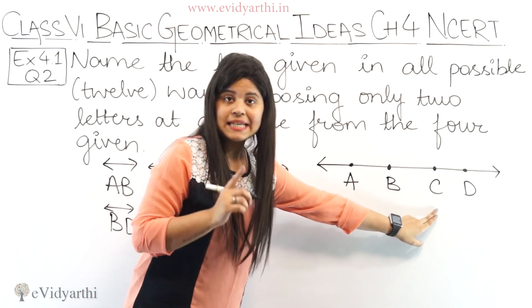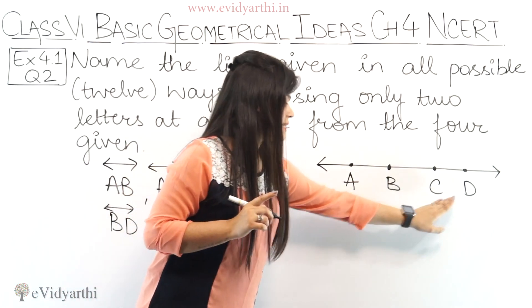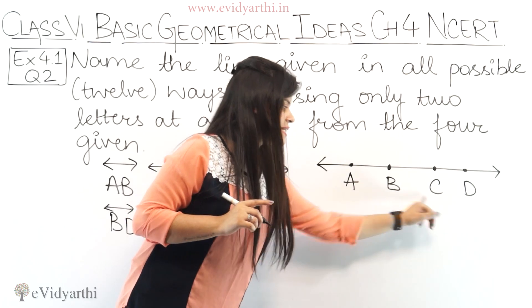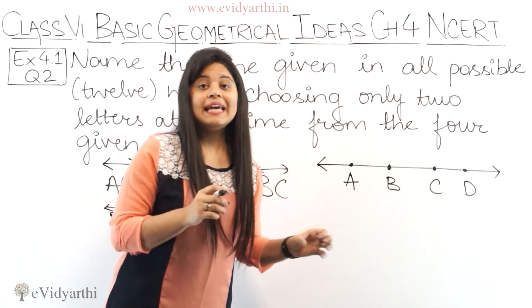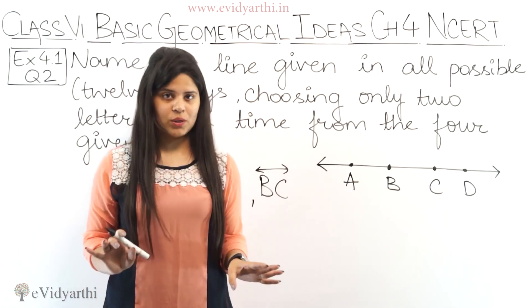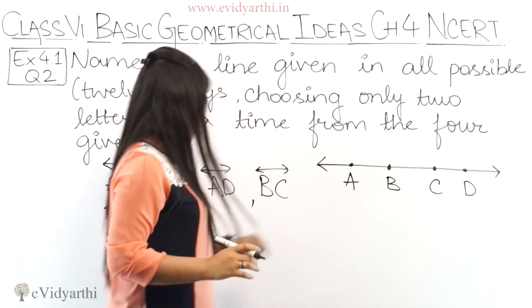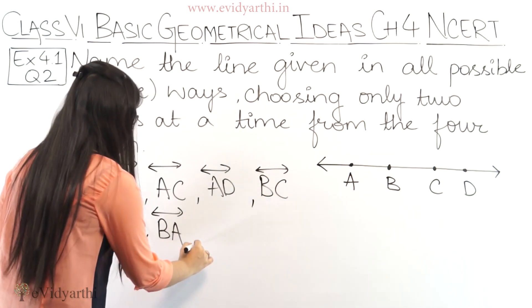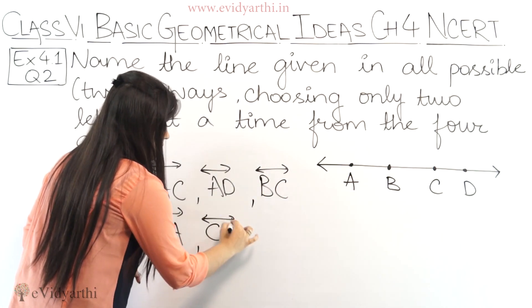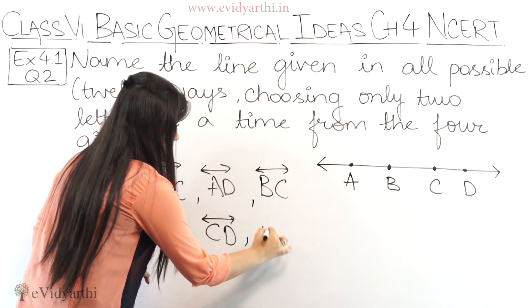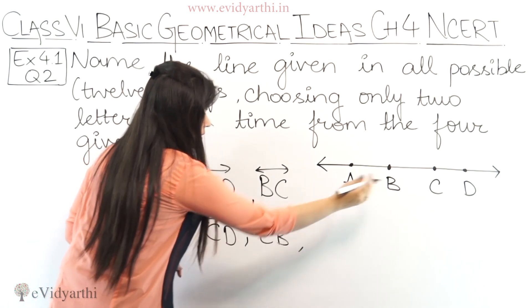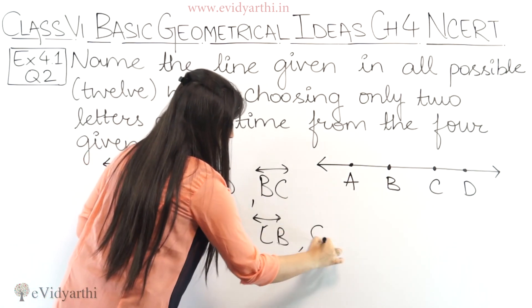Similarly, we have C points. So C to D, then we have C to B, and C to A. This is a systematic way, which means you don't miss any line. So we have CD, then CB, and then CA.